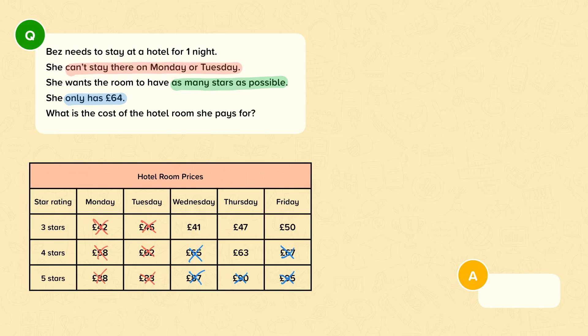That leaves us with these four options. We must choose the room that's left that has the highest star rating. These three rooms are all three-star rooms. This room is a four-star room — it's the only option that we have. So the one that she's going to pay for is this one, which is £63.